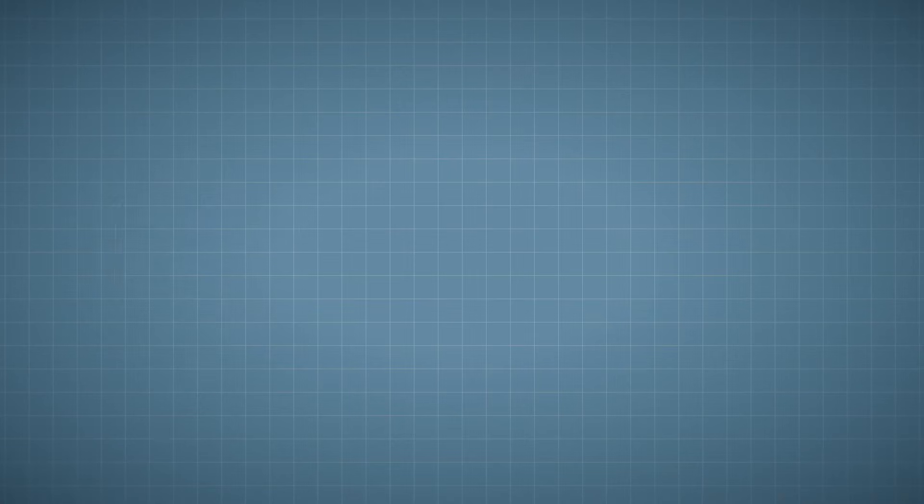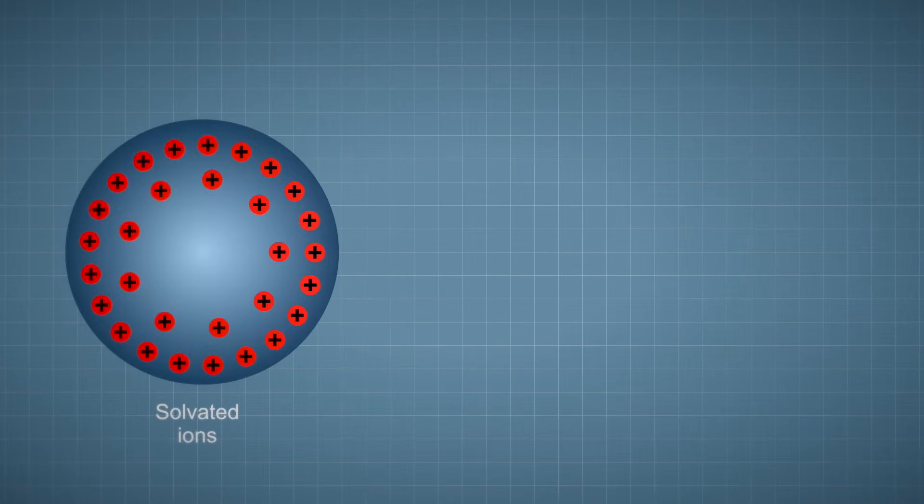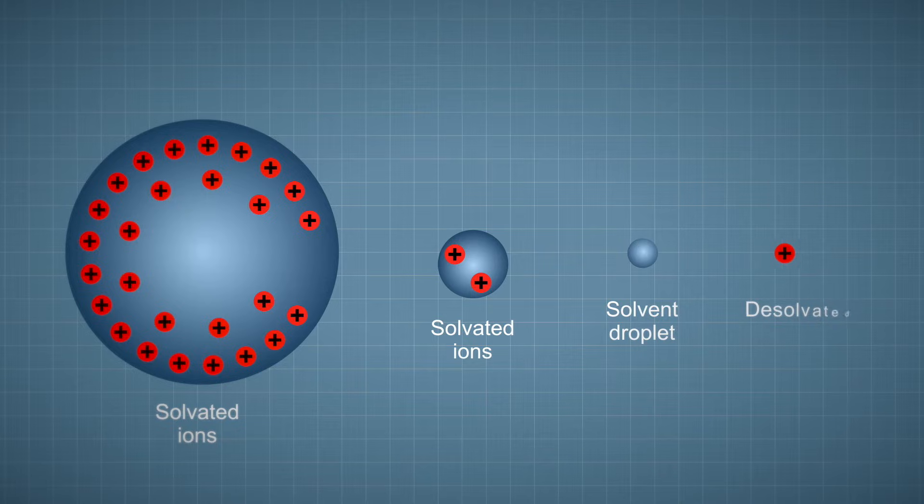The ion evaporation mechanism, or IEM, where the electric field at the surface of highly charged small droplets becomes sufficient to field dissolved ions directly from the surface. In this process, solvated ions leave the larger droplets sequentially and the droplet shrinks until just dissolved ions remain.